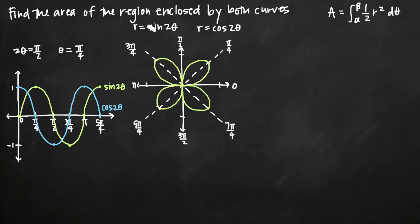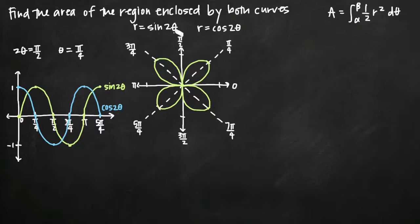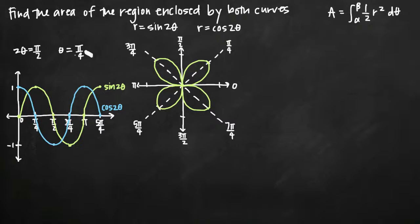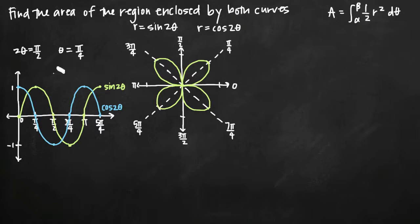The first thing I like to do with any polar area problem is to sketch both curves so I know what kind of area I'm trying to find. If you remember from previous videos where we've talked about sketching polar curves, the basic idea is that you want to set whatever's inside the trigonometric function — in our case it's 2θ in both equations — equal to π/2 and then solve for θ. So 2θ = π/2, divide both sides by 2, and we get θ = π/4. π/4 then becomes the increments with which we mark off our x-axis on the x-y coordinate plane.